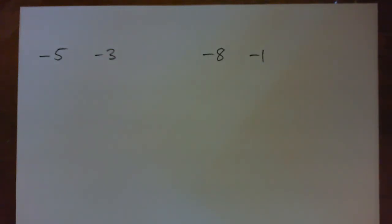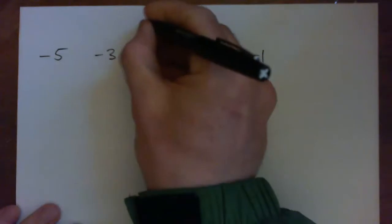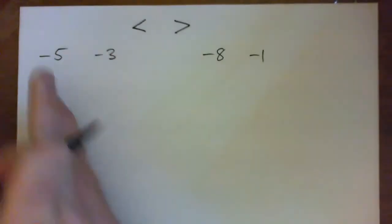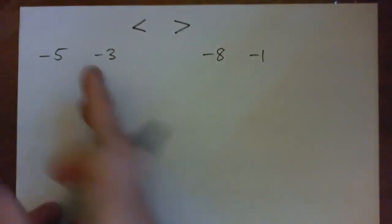So we've got to place one of the inequality symbols between each of the following to make the resulting statement true. We've got to place either this symbol or this symbol in between the numbers to make it true.